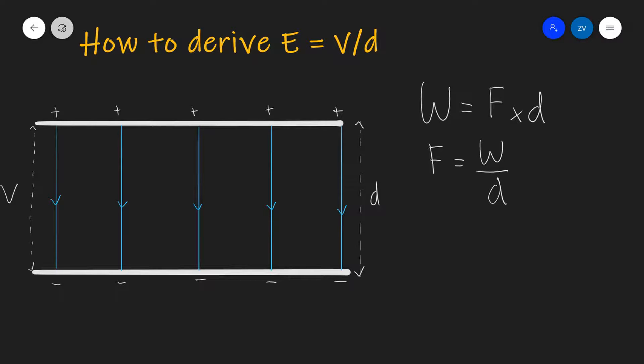Now, if we remember, our equation for electric field strength is that the electric field strength is equal to the amount of force per unit charge. If we substitute this expression for the force into here, we are going to get work done over distance over charge.